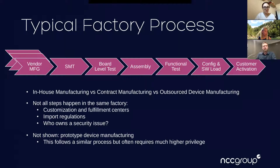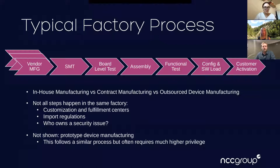The typical factory process: if you're building devices, you're buying components from various vendors, putting them on the board, doing testing, assembly, more testing, and so on. There's a difference between in-house, contract manufacturing, and ODM models. Not all steps happen in the same place — a good example is customization and fulfillment centers. At the Indianapolis airport, for instance, there are large customs-bonded warehouses dedicated to software and hardware configuration: airplanes arrive with devices from overseas, firmware gets reloaded, devices get configured, and then they're distributed for resale.